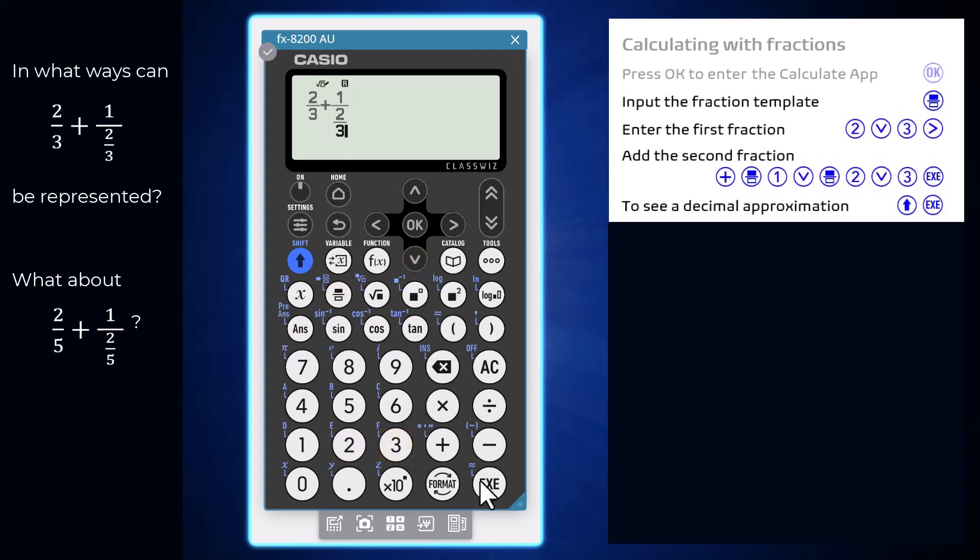Press Execute or OK to perform this addition. The output of 13 over 6 is provided as an improper fraction as this is the 8200's current and default fraction result setting.